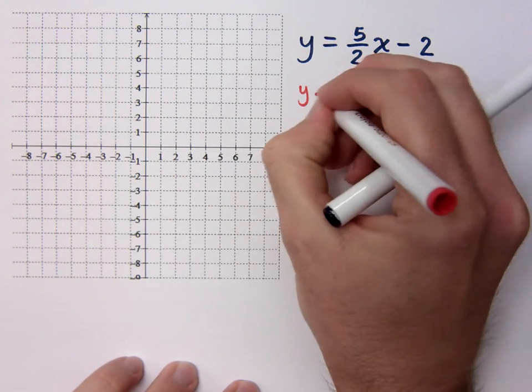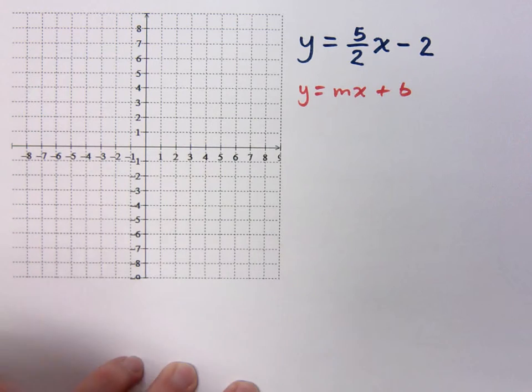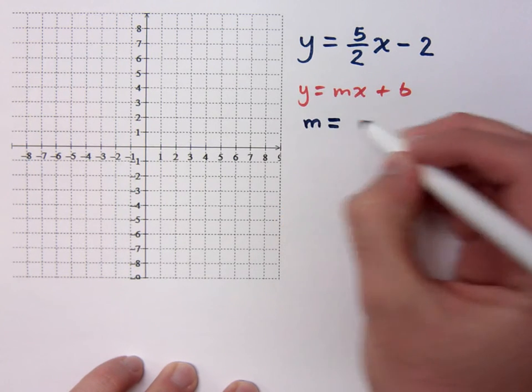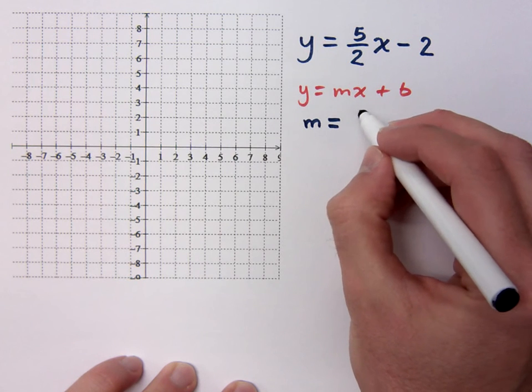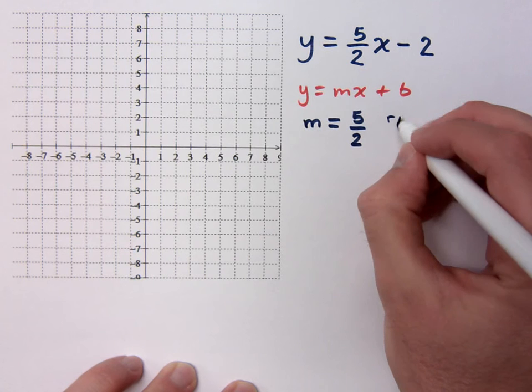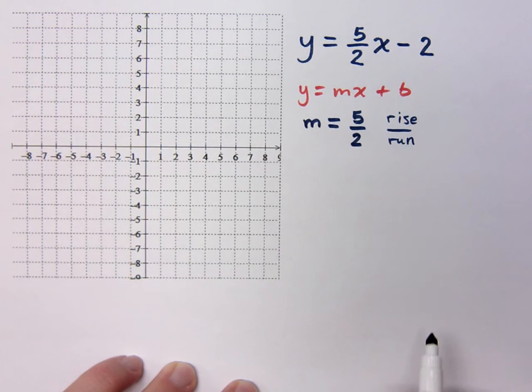We're matching this up with the form y equals mx plus b. So if I do that, what is my slope? Represented by the letter m. It's 5 halves, 5 over 2. Now remember, we're looking at this as rise over run.